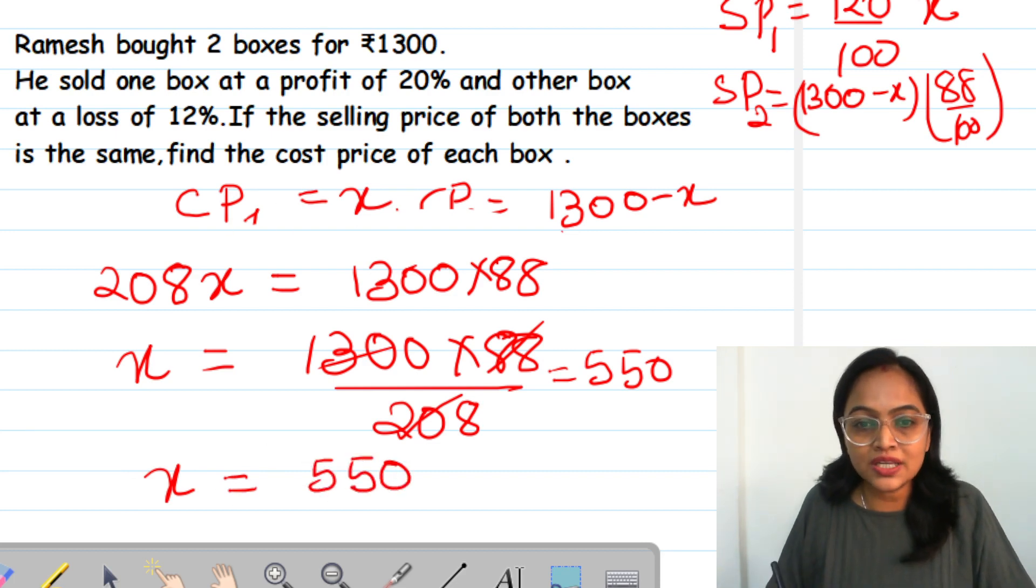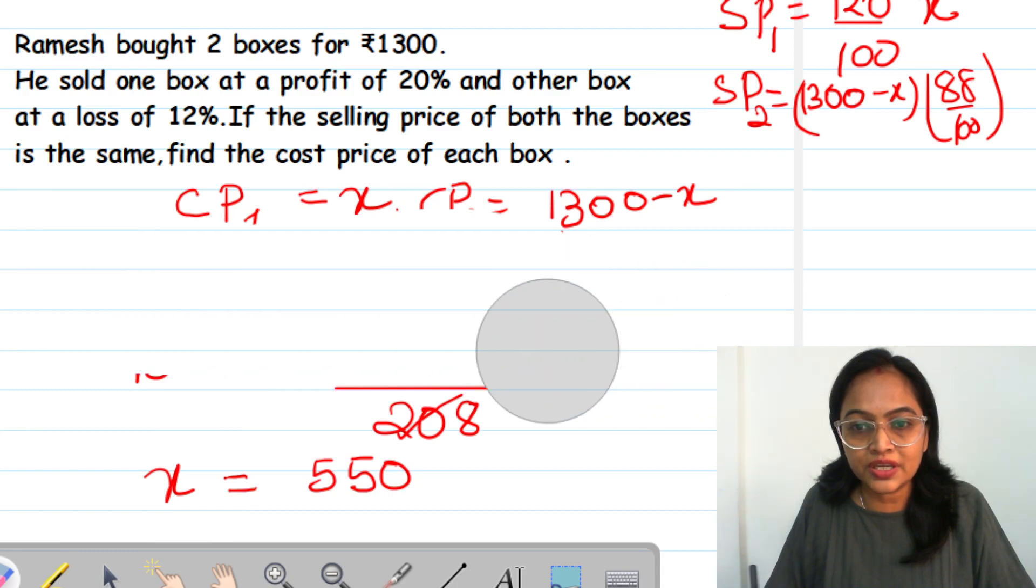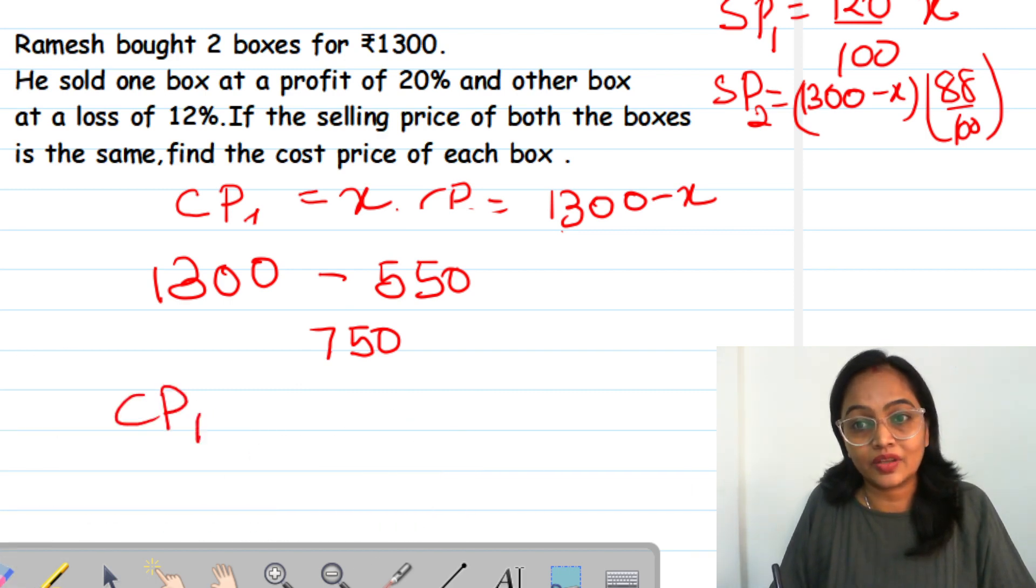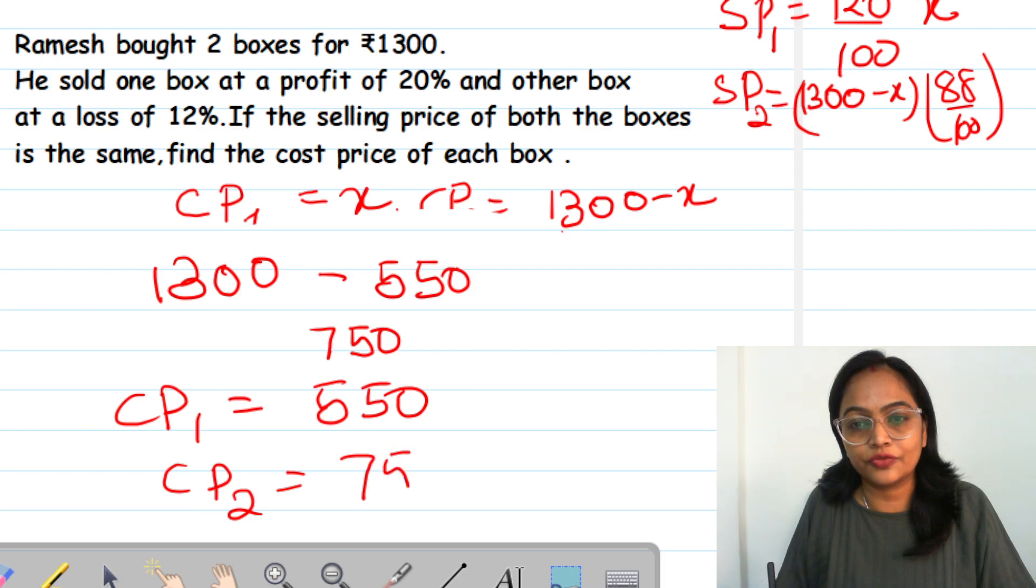So CP1 is 550. Now CP2 is 1300 minus 550 which comes out as 750. So my CP1 is 550 and my CP2 is 750.